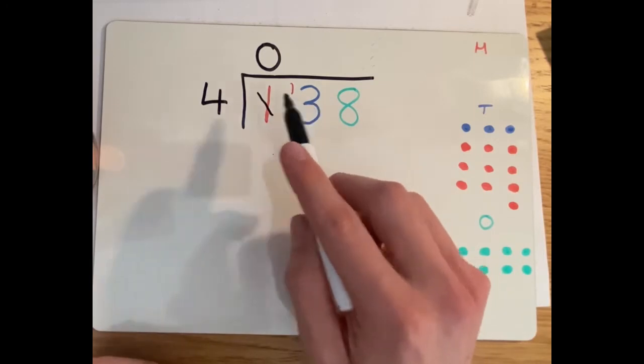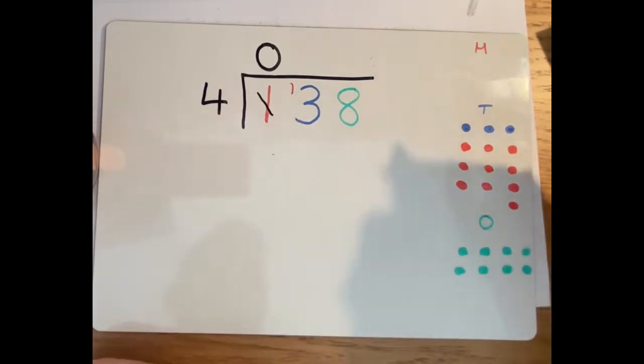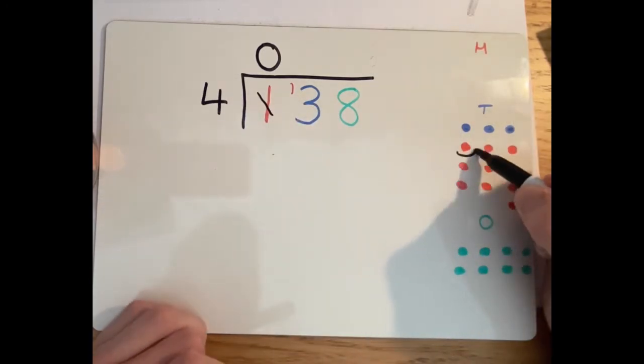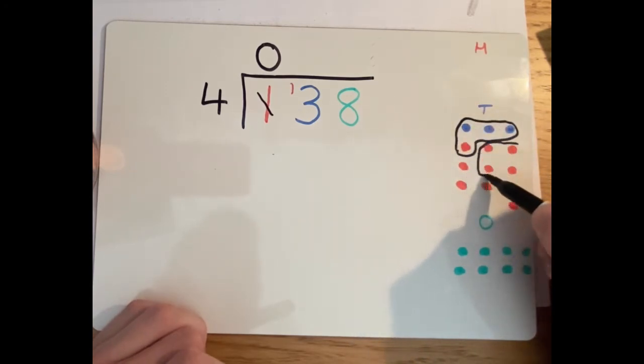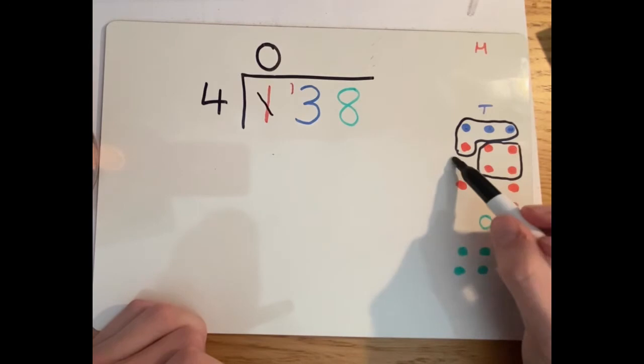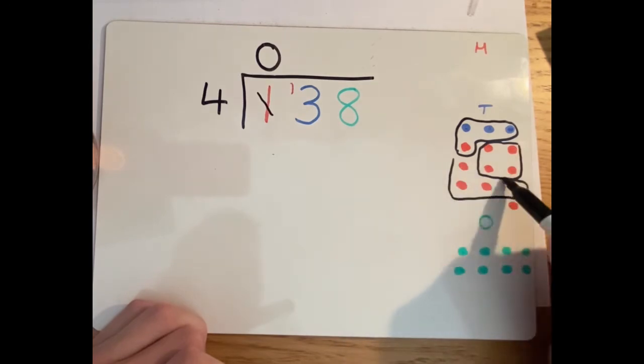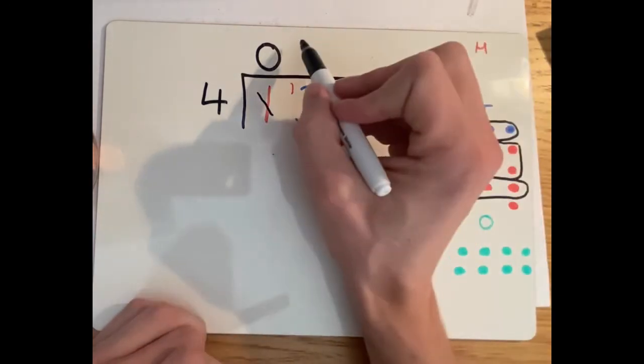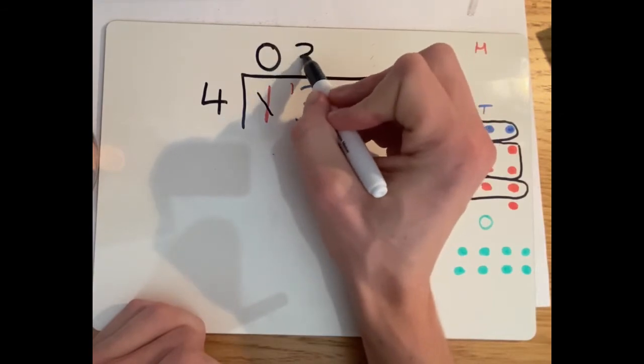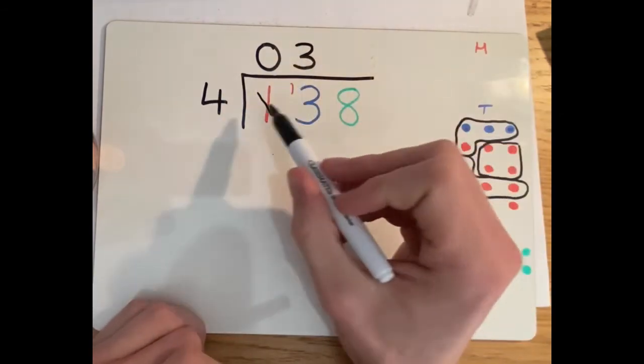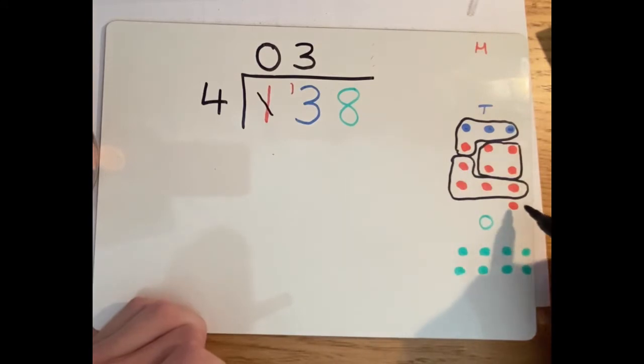Then we say 13 divided by four now. Let's put them into groups of four. One group, two groups, three groups, with one left over. So we were able to make three. So 13 divided by four is three, but we have a remainder of one.